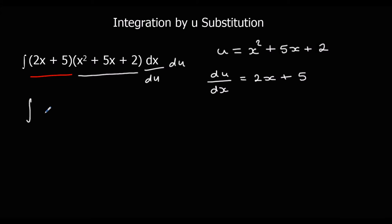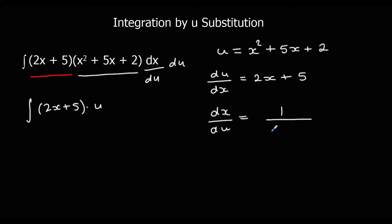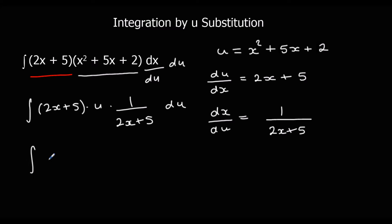That gives us the integral of 2x plus 5, times u, times dx/du. And dx/du is the reciprocal of du/dx, so it is 1 over 2x plus 5. With respect to u, we can see that 2x plus 5 cancels out, and it's just going to leave us with the integral of u with respect to u.